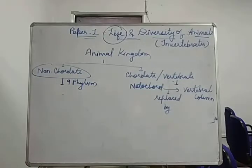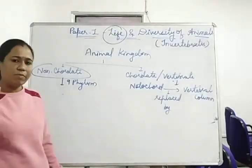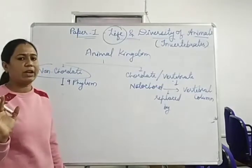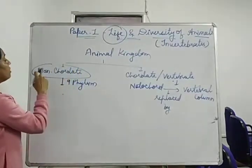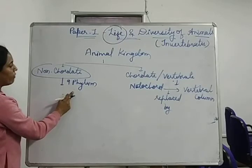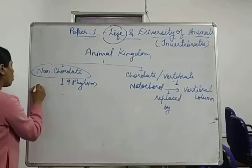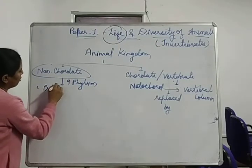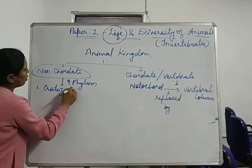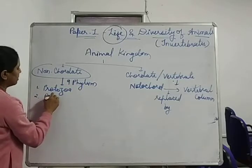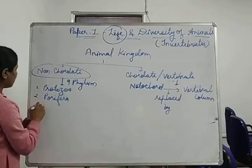There are also minor phyla but we will not study them. We will talk about the nine major phyla in this paper. So non-cordates are divided into nine phyla. The first is Protozoa. The second is Porifera.